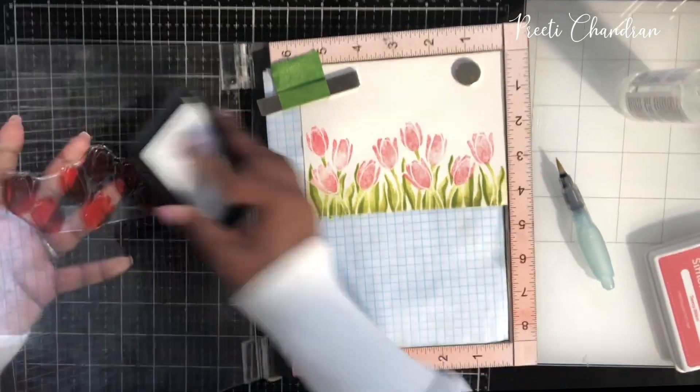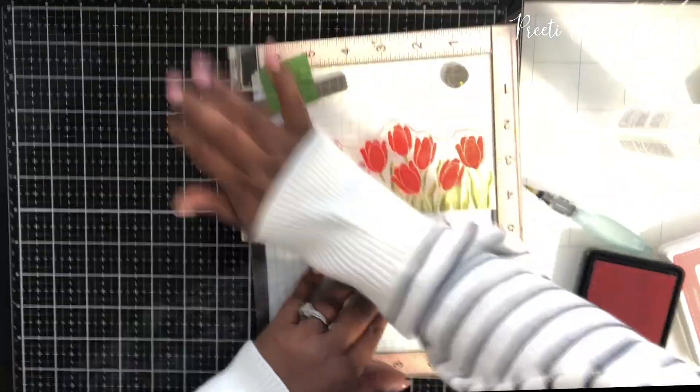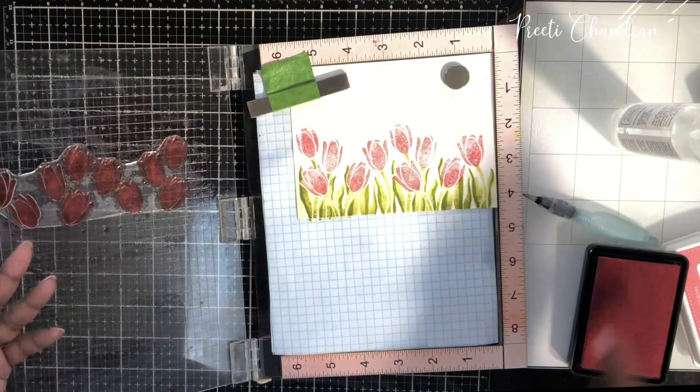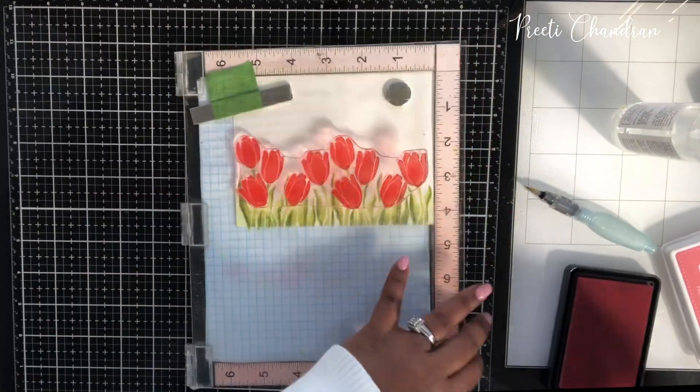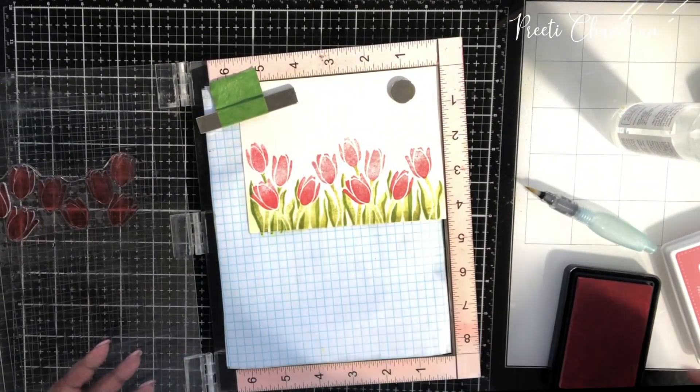Again, I started off by stamping the first time directly onto the paper. Again, the paper is moist. The second time I added the water directly to the stamp and I stamped it. I did this multiple times because it required it to go. I had to do it a few times, mainly because of the watercolor and the water that I was putting in the paper.